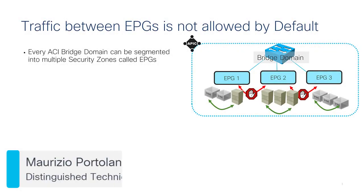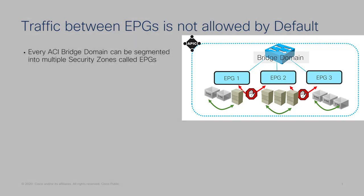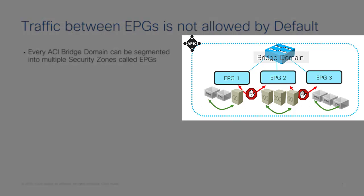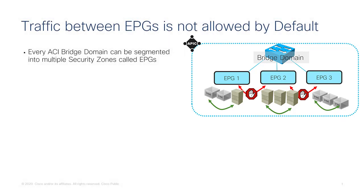In ACI, traffic is not allowed by default. In ACI you configure layer 2 domains called bridge domains, and each bridge domain can be divided into multiple security zones — for example EPG1, EPG2, EPG3. These could be security zones on the same bridge domain, or some EPGs on one bridge domain and some EPGs on another bridge domain.